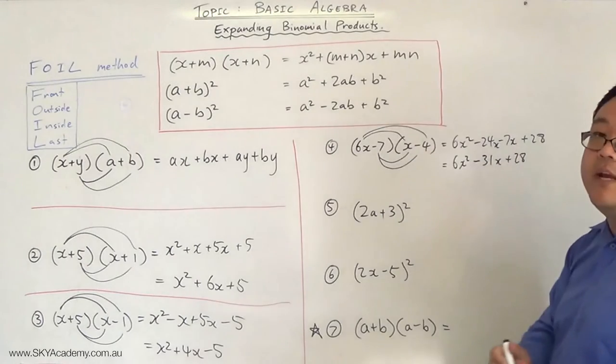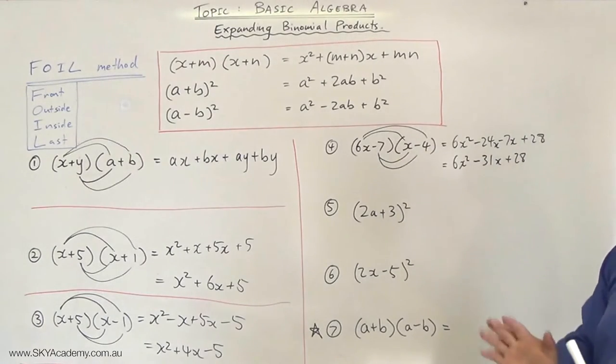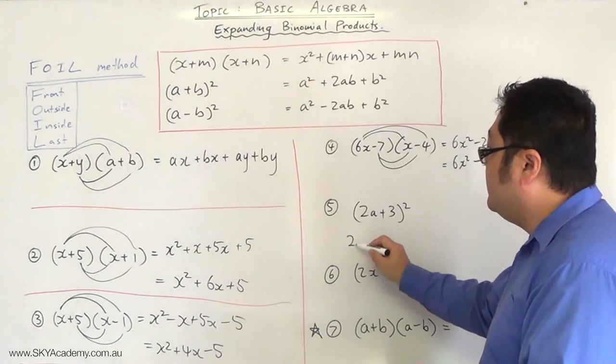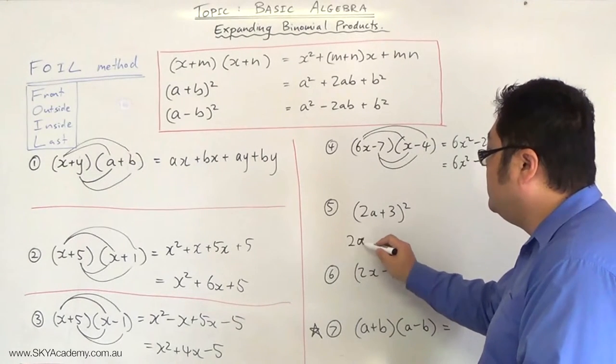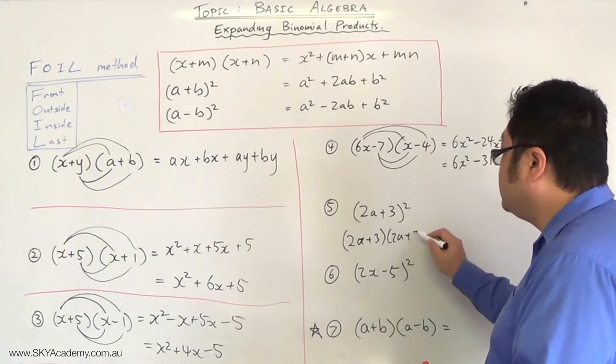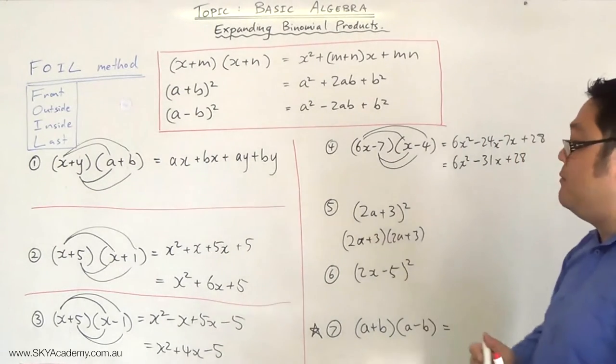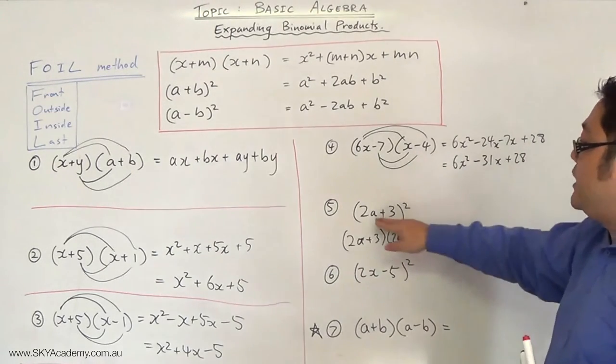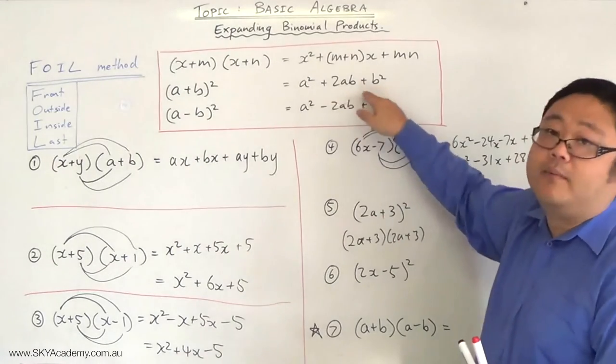Now this is what we call a perfect square. There's two ways of doing this. The first way is doing it exactly the same way as we did the FOIL method: (2a+3) times (2a+3) and then doing it in the FOIL method. I'm going to do a slightly different method which is just substituting this into the formula.